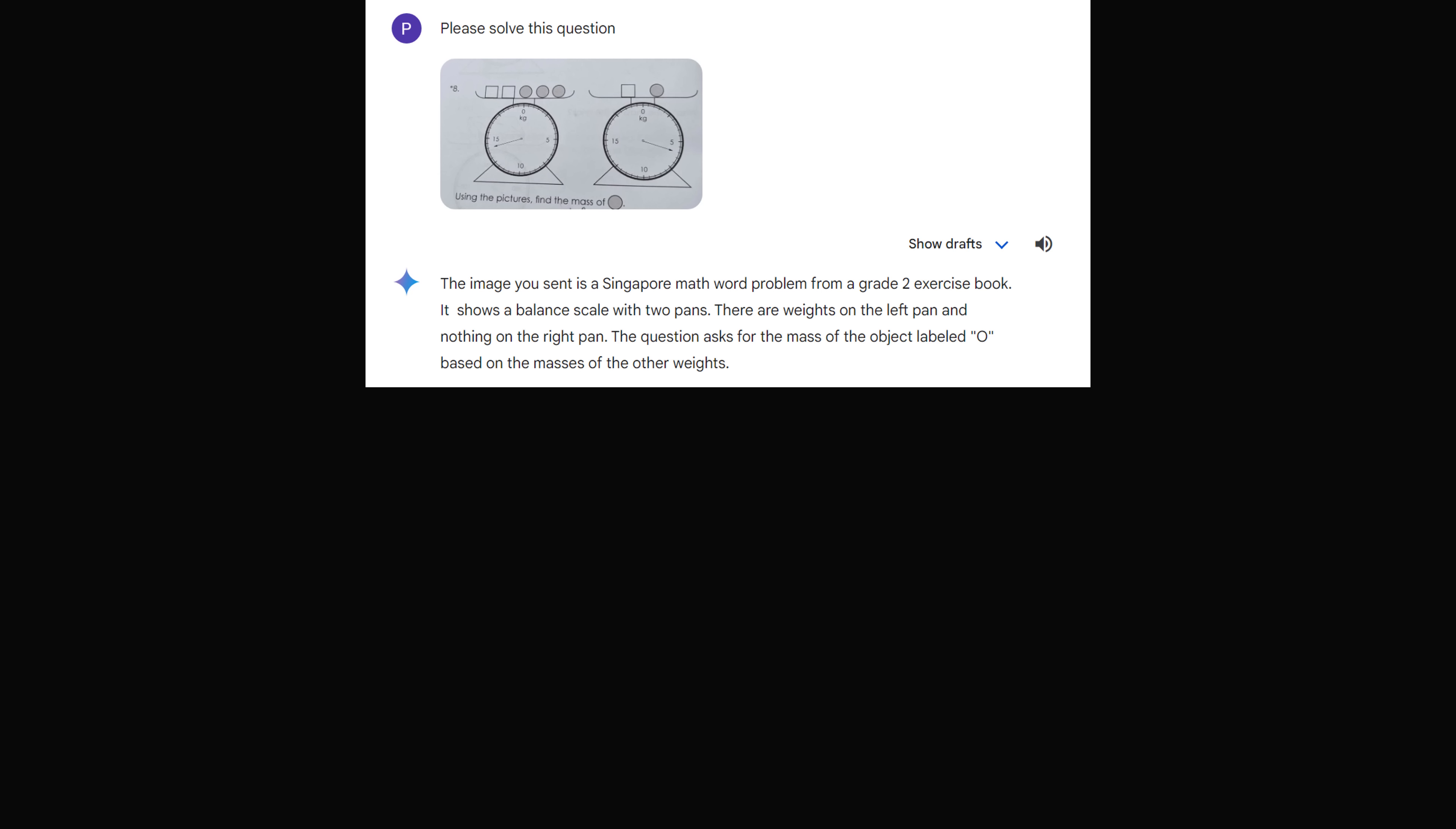It shows a balance scale with two pans. There are weights on the left pan and nothing on the right pan. The question asks for the mass of the object labeled O based on the masses of the other weights.